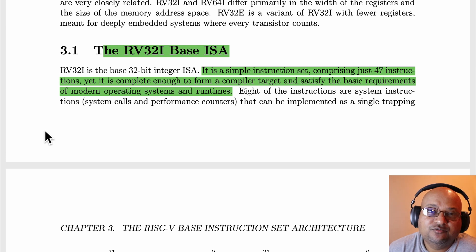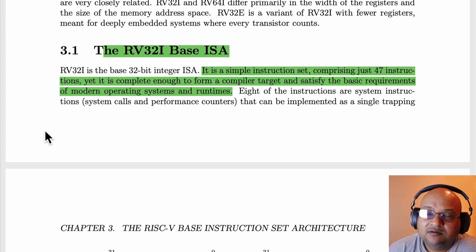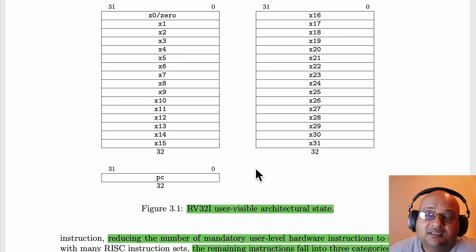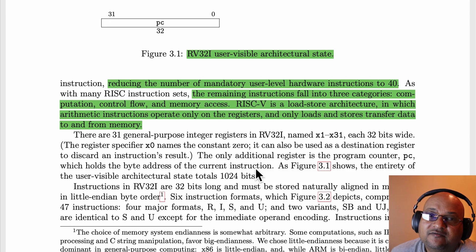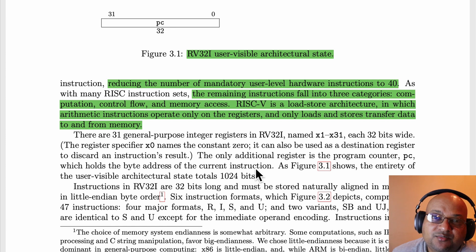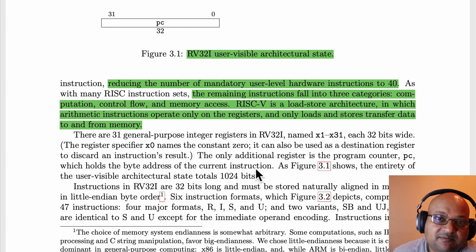Starting at the very simplest level, they have a 32-bit base instruction set with only 47 instructions, but it is complete enough to build an entire modern operating system and all the applications that run on top of it. They have 32 registers, each 32 bits wide, and one program counter register. You have three main kinds of instructions: straightforward computation, control flow, and memory access. It is a pure load-store architecture in that all computation happens on registers, and then you load and store between registers and memory.